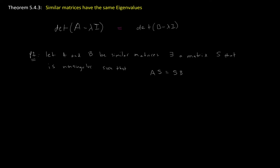Now that's important because we can manipulate this equation to obtain a more useful form. We're going to rearrange this by multiplying on the left side by S inverse. S is non-singular so the inverse exists. So S inverse times A times S equals S inverse times S times B. Since S inverse times S is the identity, we're just left with B. So B equals S inverse AS. That's another form showing two matrices are similar when this property holds with a non-singular matrix S.